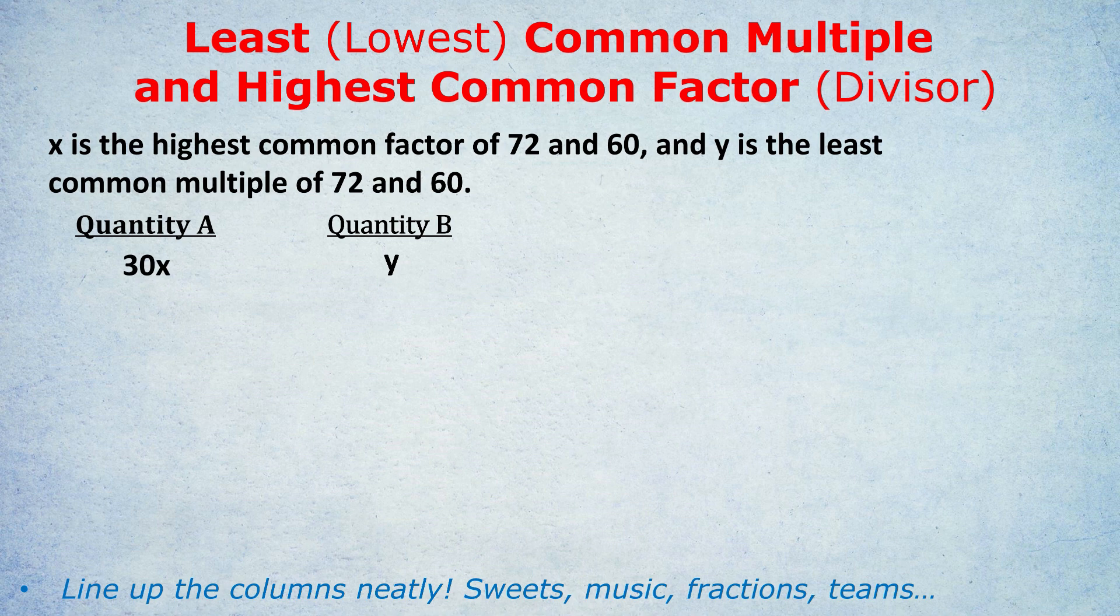So as a quick rule, it's not always the case, they could sometimes be the same. As a quick rule, multiples are bigger, factors are smaller than the numbers. The least common multiple, for example, of 3 and 2 would be 6 because it's a multiple they have in common and it's the least of all the multiples they have in common. 3 and 2 have other multiples in common like 12, but 6 is the least of all the common multiples.